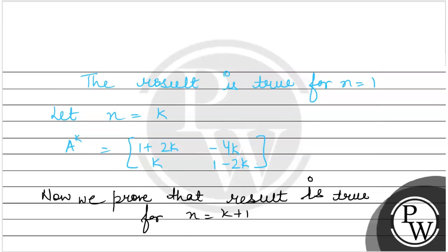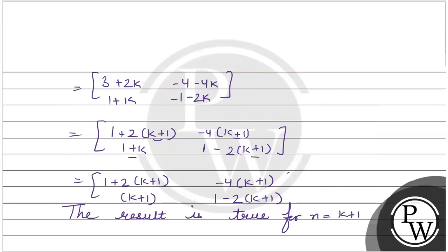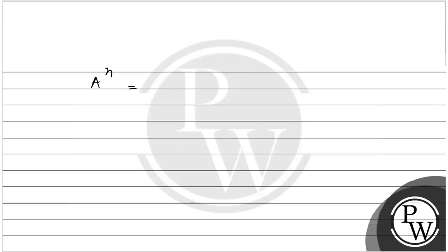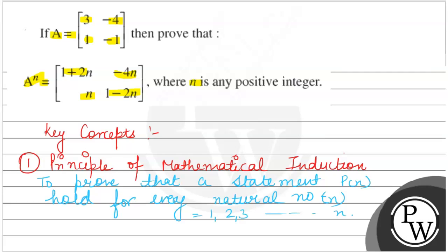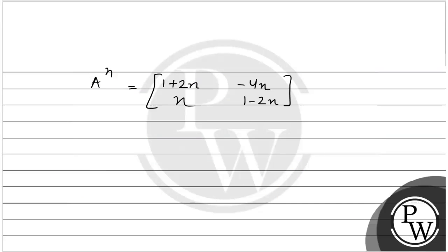So we can say that A^n = [1+2n, -4n; n, 1-2n] where n is any positive integer. We have proved this question by using our two key concepts: the Principle of Mathematical Induction and Matrix Multiplication. Hope you understood it well. Best of luck.